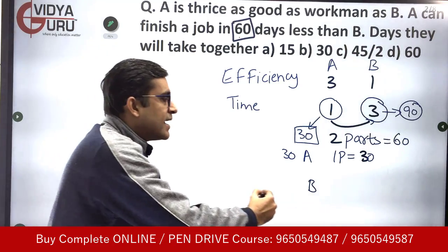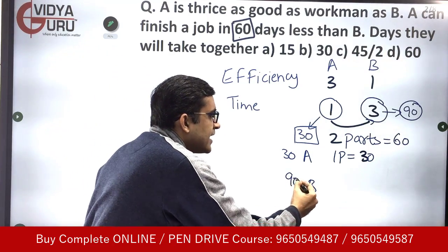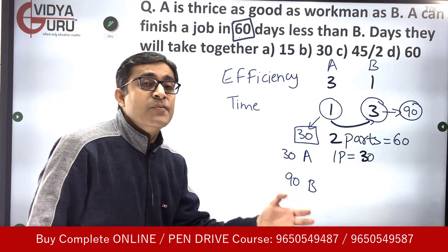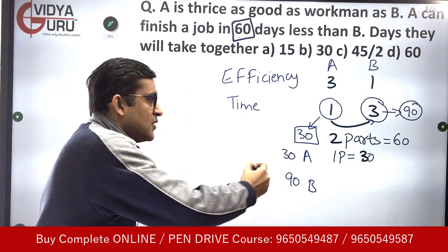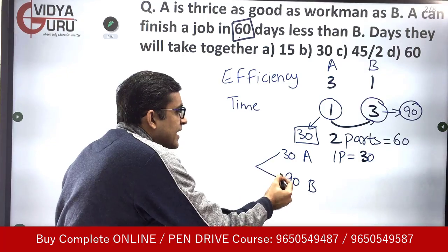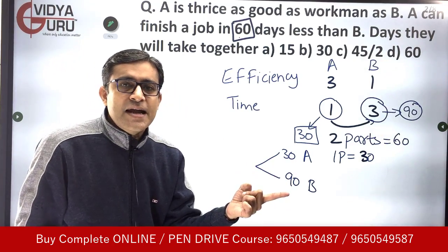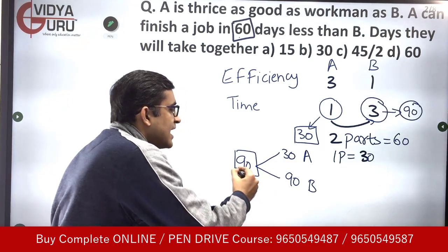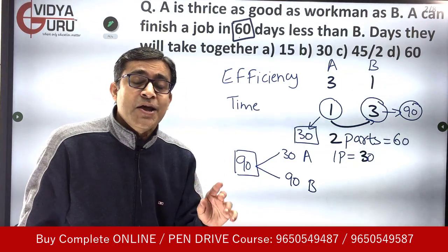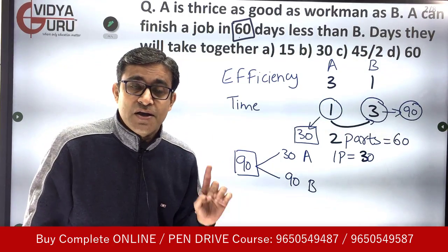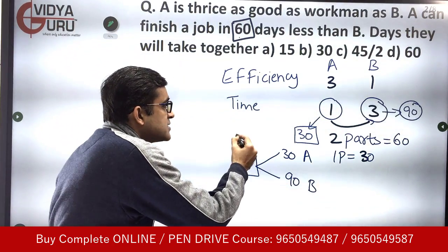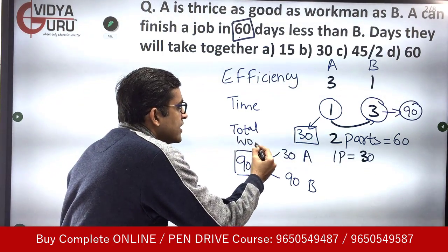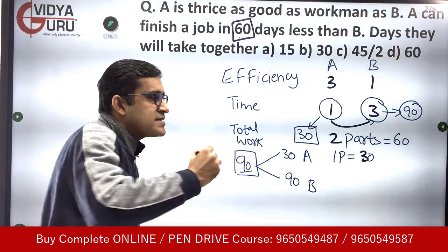We will take the LCM of the time they take individually. The LCM of 30 and 90 is 90. This LCM represents the total work. So the total work is 90 units.